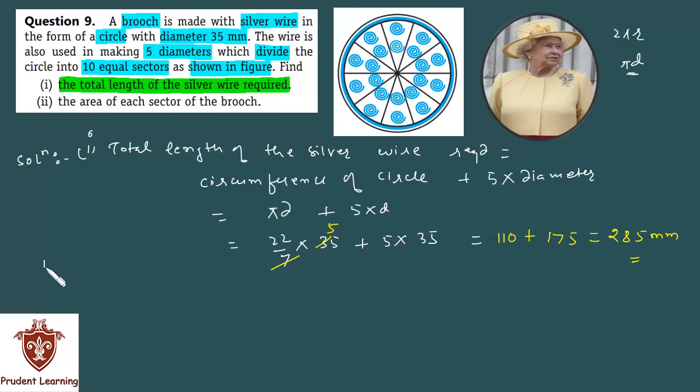Now there is a second section. In the second section you have to find the area of each sector of the brooch. One thing to note: the 5 diameters divide this circle into 10 equal sectors.